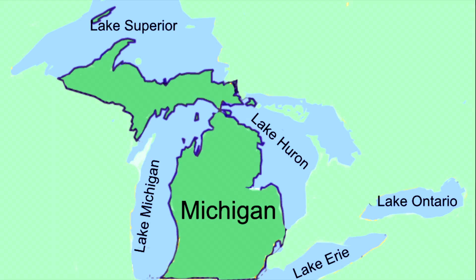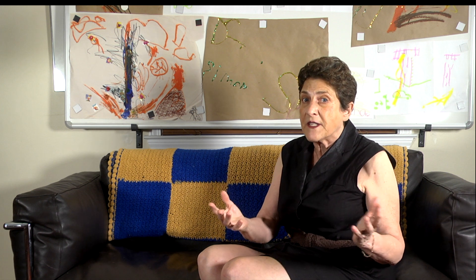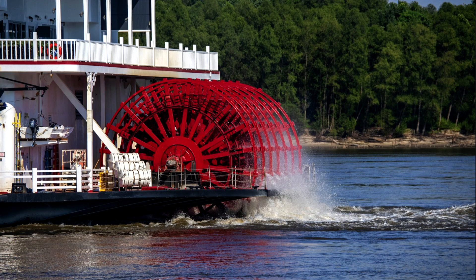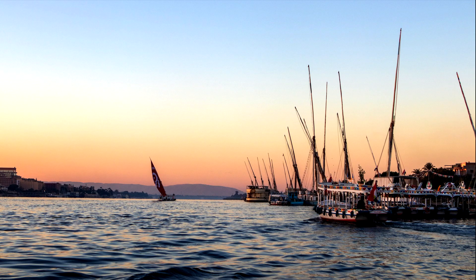There are five lakes surrounding the state of Michigan — Lakes Superior, Michigan, Huron, Erie, and Ontario — that are referred to as the Great Lakes. They hold about 90% of the fresh water in the United States, which is about 20% of the fresh water on Earth. Rivers like the Mississippi in the United States, the Amazon in South America, and the Nile in Egypt and Sudan are also fresh water.